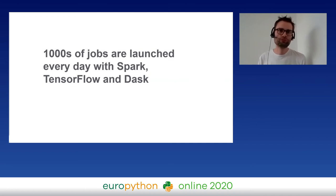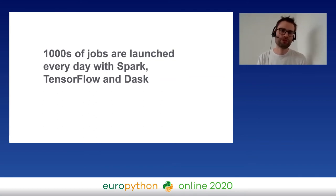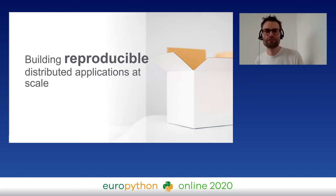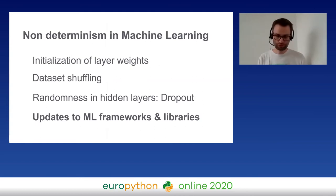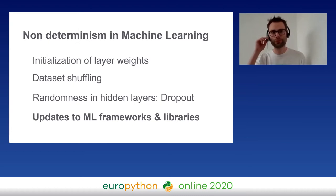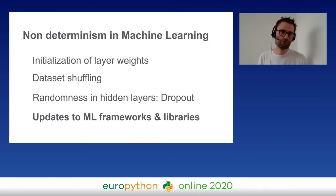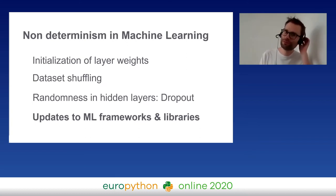We also launch thousands of jobs in parallel — people running Spark, TensorFlow, Dask, different teams running different jobs. Another thing that is quite important for us is reproducibility. We want to build reproducible applications, which is critical in machine learning — if you add a new feature, you must be sure that your uplift in a metric is linked to that feature. Sources of non-determinism in ML include: how you initialize layer weights, shuffling datasets in distributed training, and dropout in deep learning.